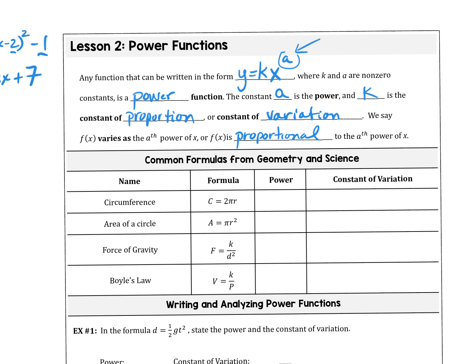Some things are power functions that you see but don't realize are power functions. Circumference is a power function, because it is r to the first power — so the power is 1. The constant of variation is always going to be the thing in front of the variable. What's in front of r? 2π. So the constant of variation here is 2π.